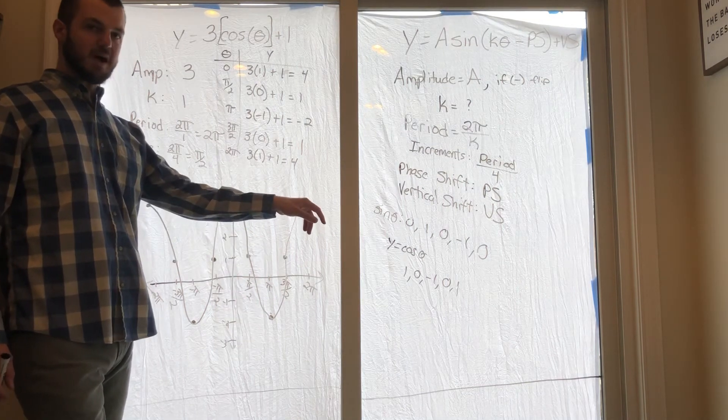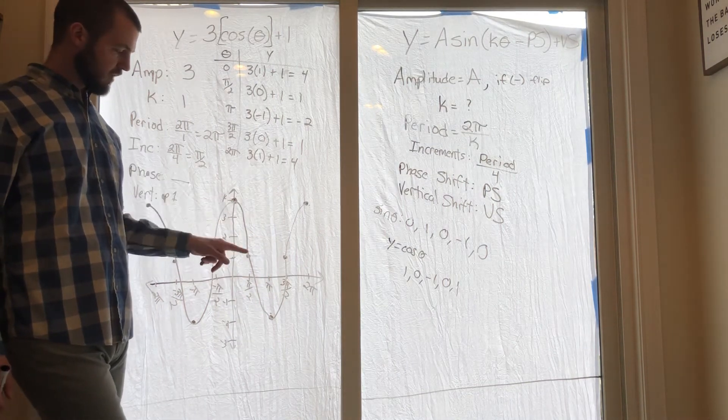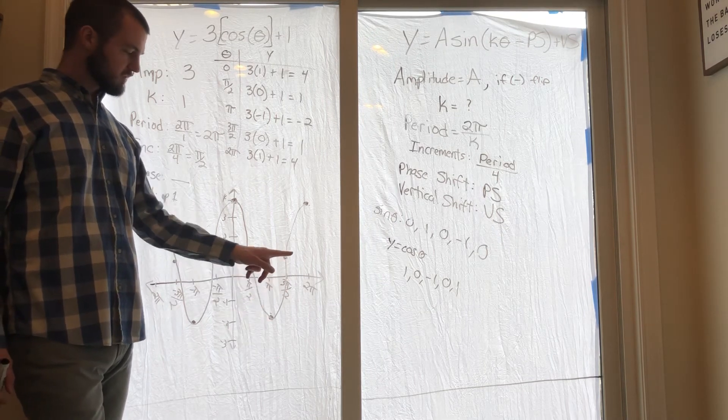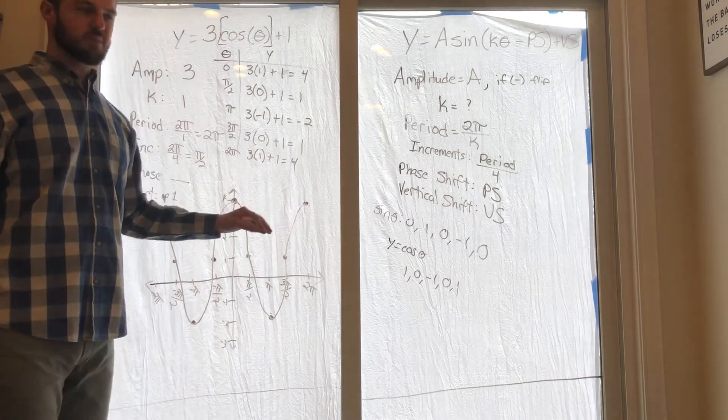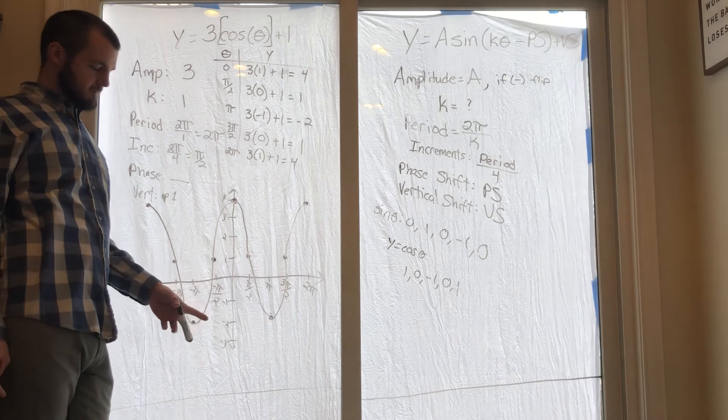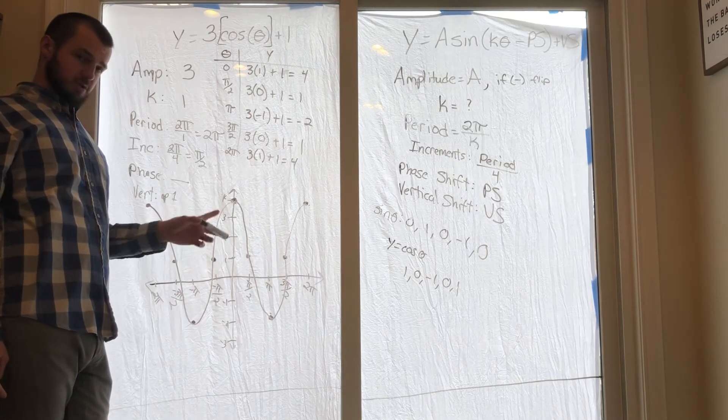You should have (0,4), (π/2,1), (π,-2), (3π/2,1), (2π,4). Yours might look a little bit different if you shift your... if you change your y-values.